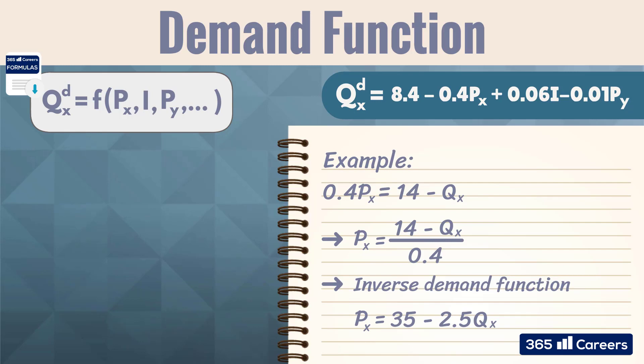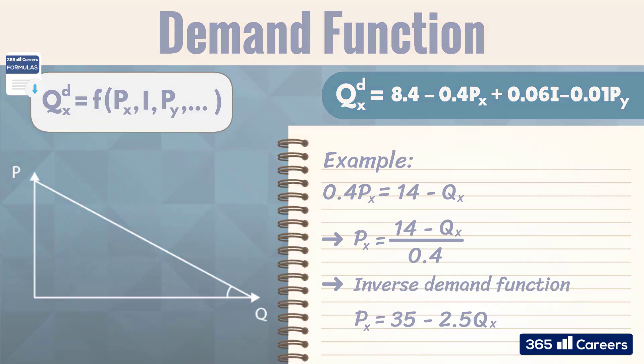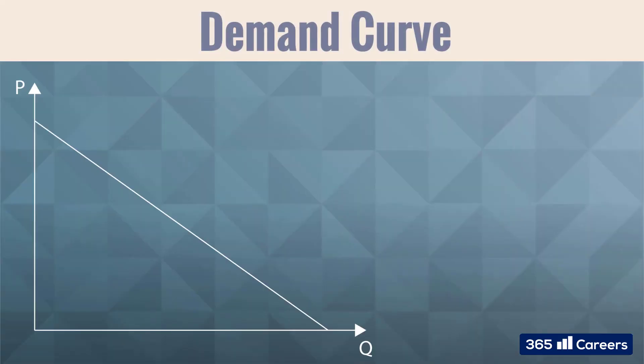This equation allows us to obtain the price in terms of quantity. Furthermore, if we draw the graph of this function, it will give us the demand curve. The demand curve simply shows us the inverse relationship between quantity and price.